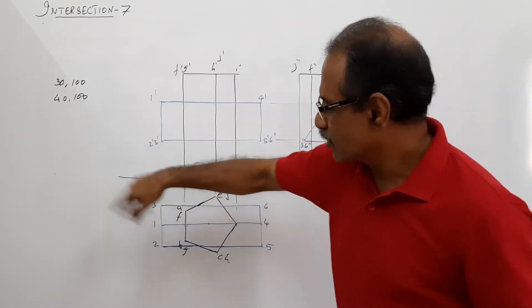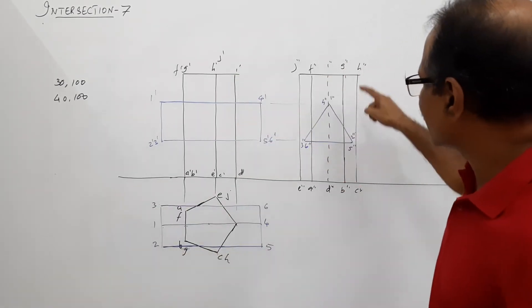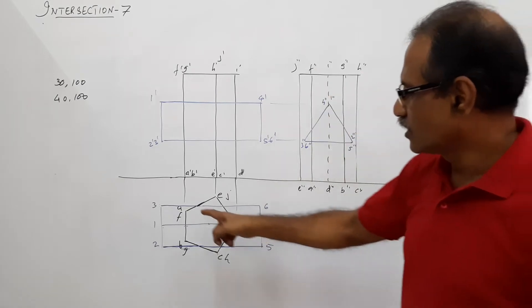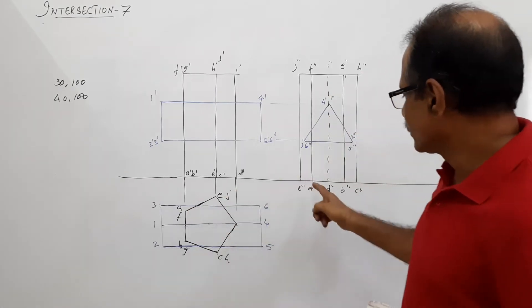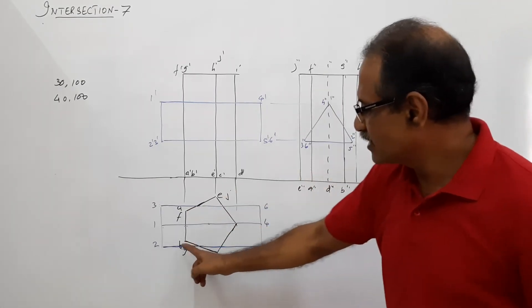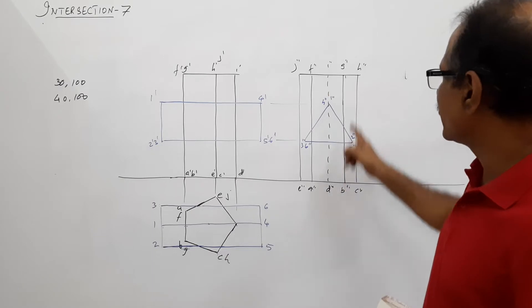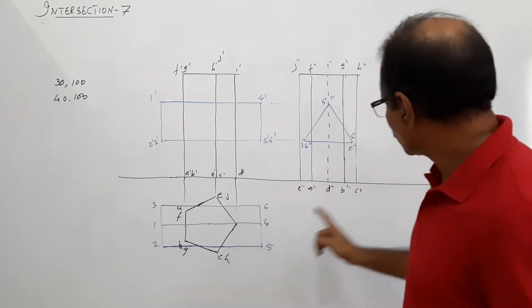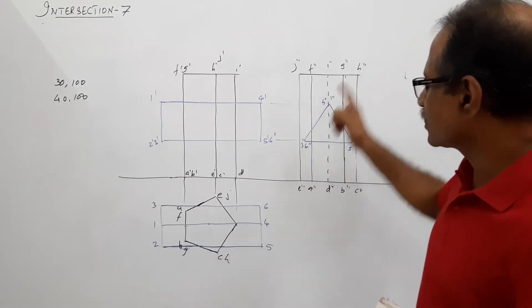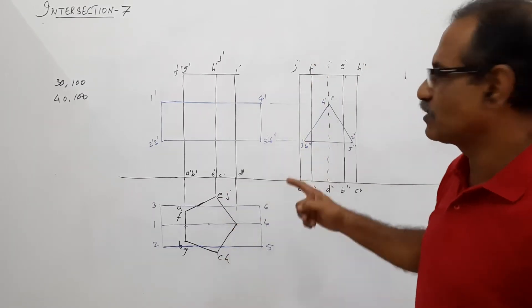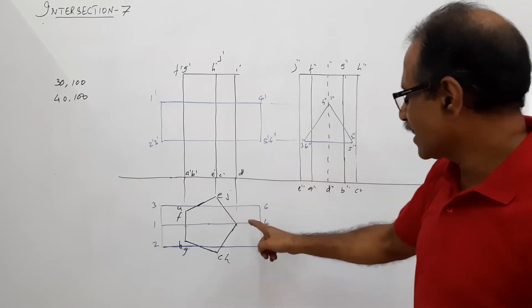When you look from the end, you will see 4 vertical edges: 1, 2, 3, 4. You will see edges AF, BG, CH, EJ — the vertical edges of the pentagonal prism visible in the end view.